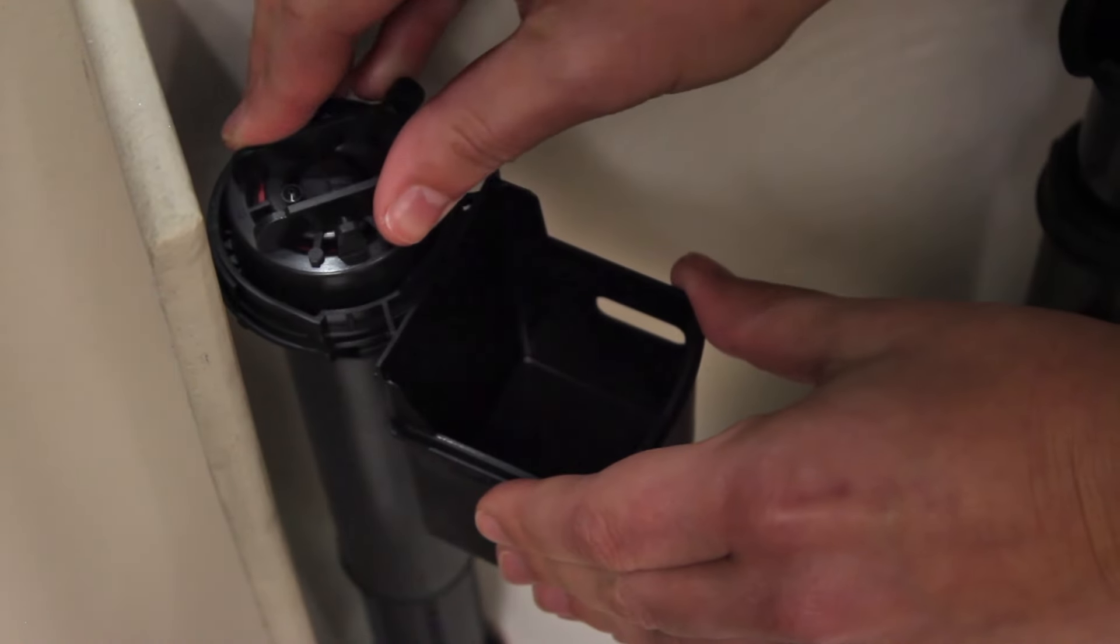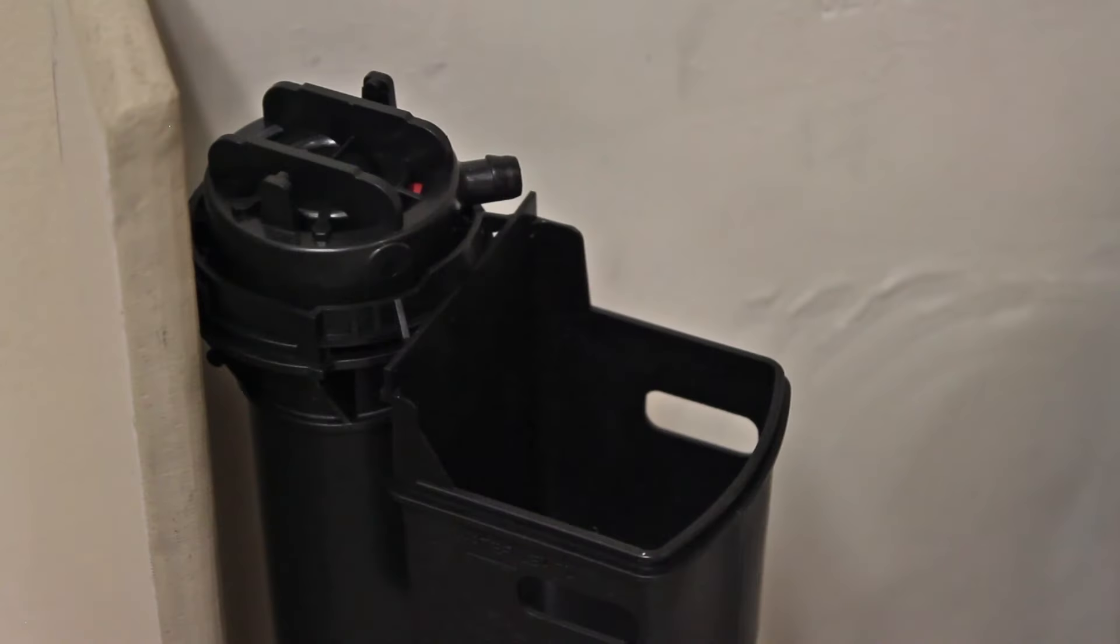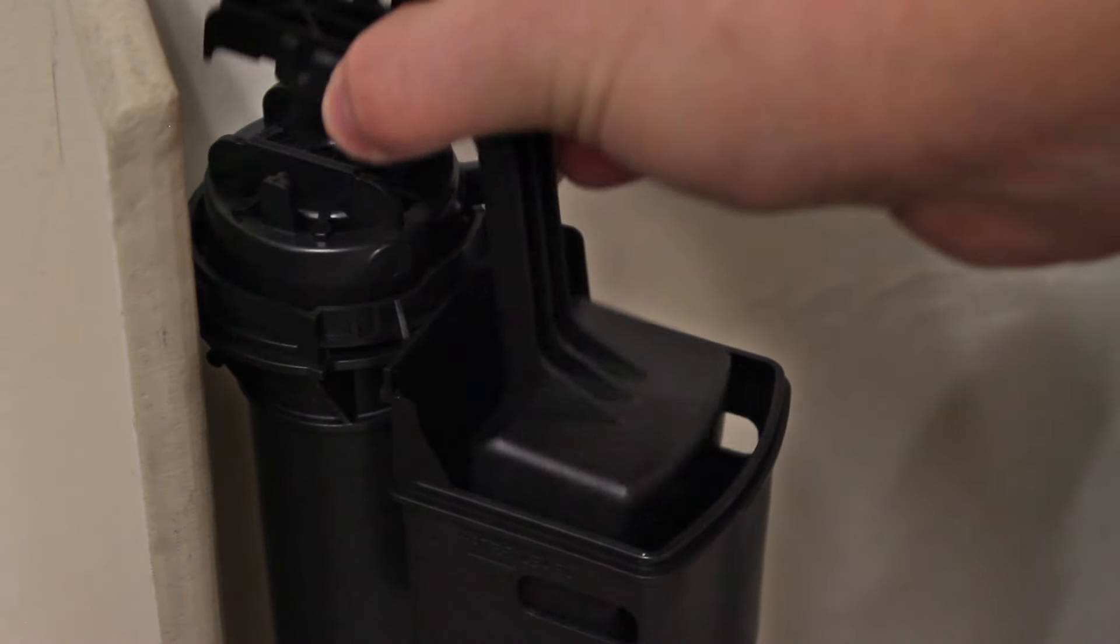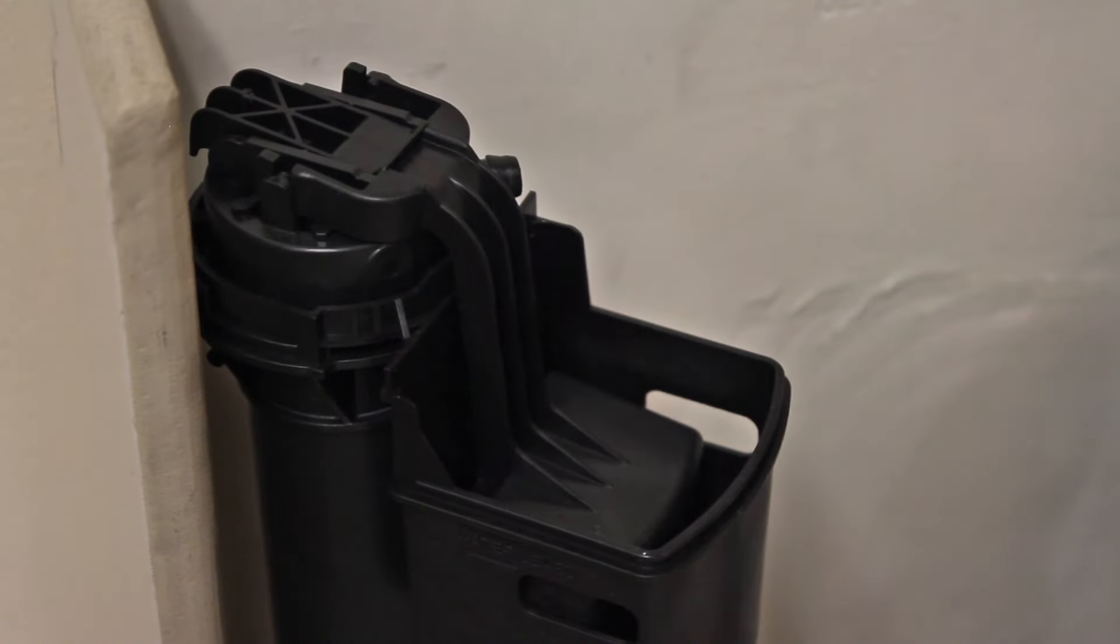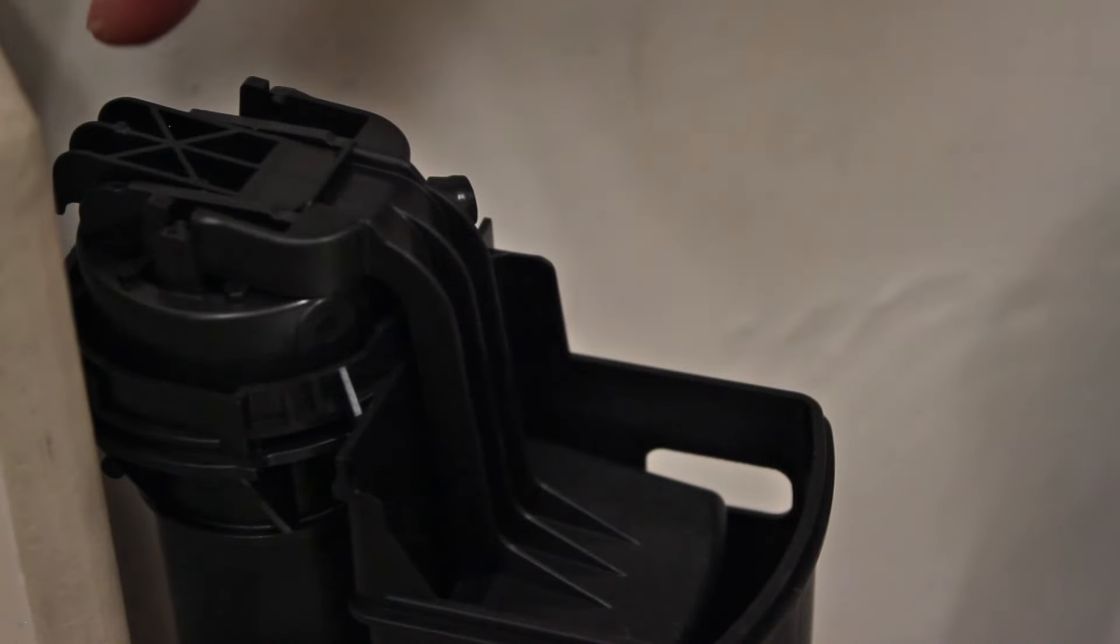Twist the cap assembly clockwise to lock it onto the fill valve. To reattach the float, pinch the float arms in and clip them to the valve body. Tap the float arm to ensure the float is moving freely and that the arms are securely latched onto the cap assembly.